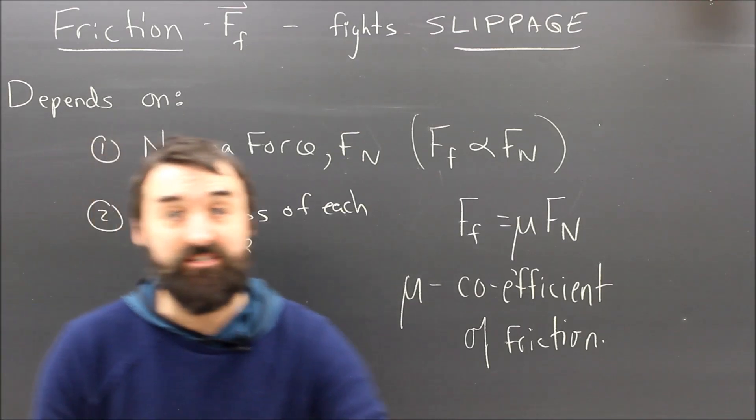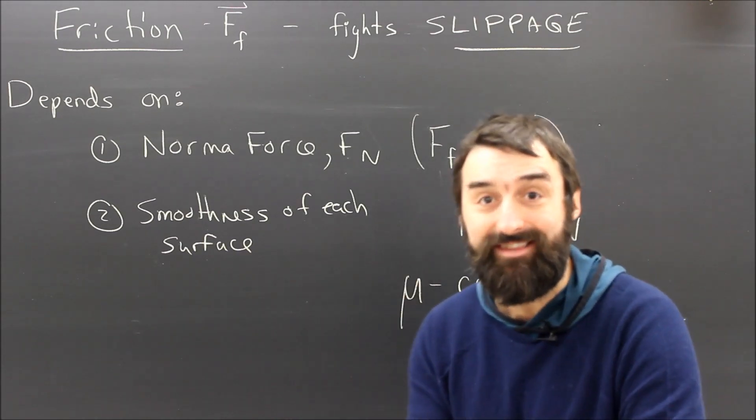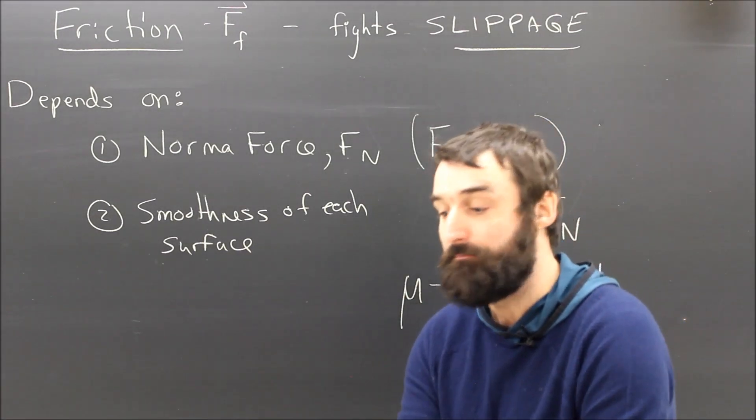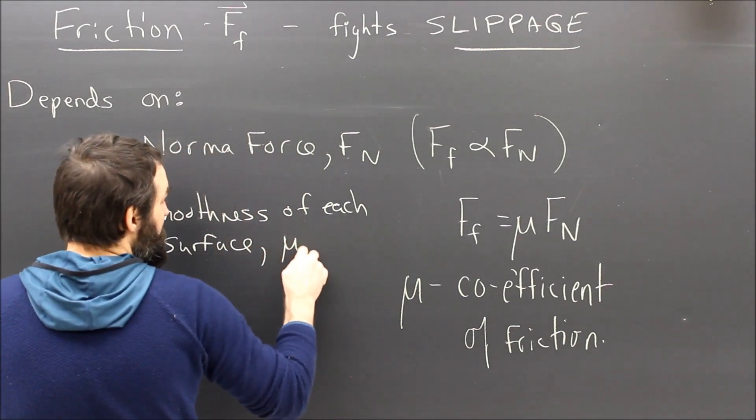My one book does not have a coefficient of friction. There's no such thing as mu for the book. But there is a mu for the book and the desk. There's a different mu for the book and the floor. So, the smoothness of each surface, and that is mu.